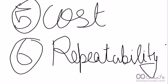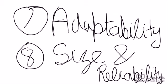Fifth, cost — time sharing of a single processor among a number of signals reduces the processing cost per signal. Sixth, repeatability — you can exactly repeat the performance of a DSP system since it is completely digital; it will remain the same even after 10 years, whereas analog systems are affected by noise and component aging. Seventh, adaptability — DSP systems are easily upgradable since they are software controlled. Eighth, size and reliability — DSP systems are small in size, more reliable, and less expensive.